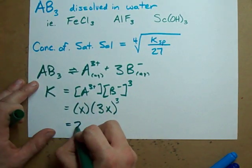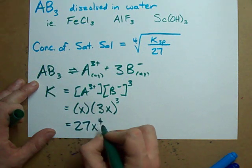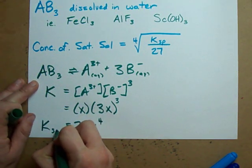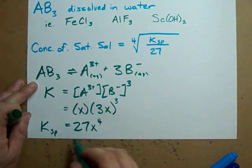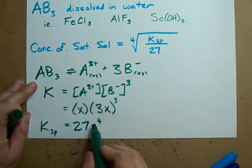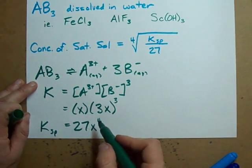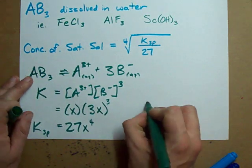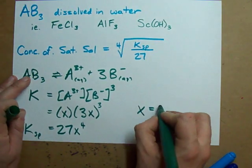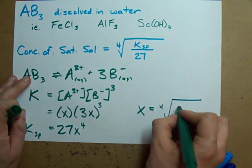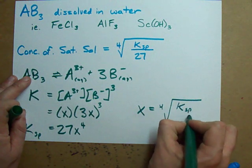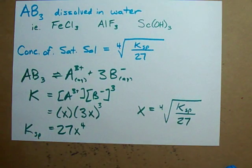Multiply this out. You end up with 27X to the four. How do you solve for X? You divide by 27 and take the fourth root, or to the power of a quarter. And that's why the saturation concentration of these compounds is the fourth root of your KSP divided by 27.